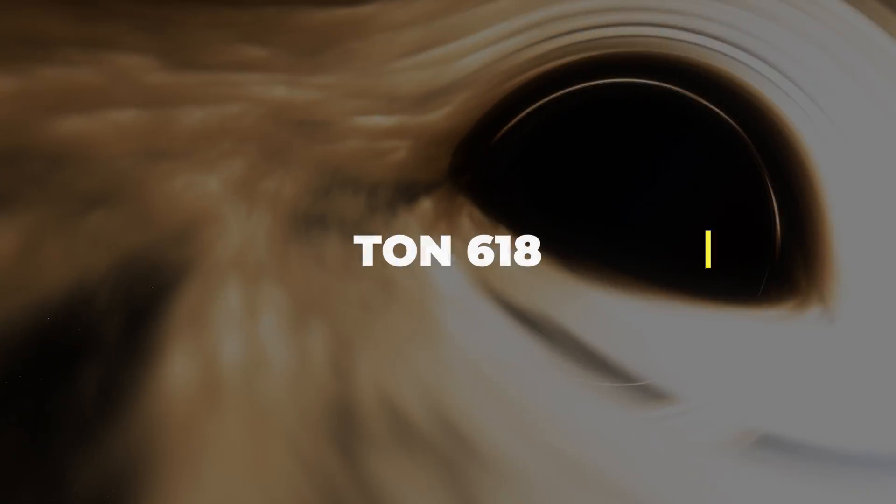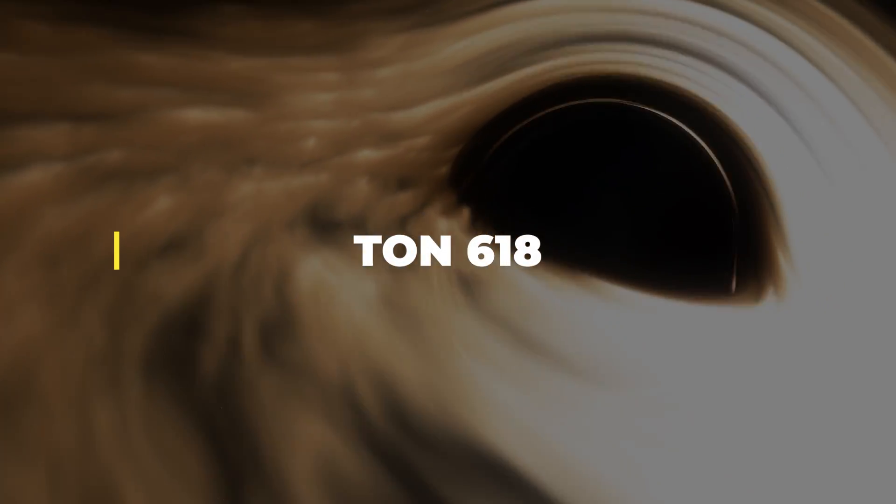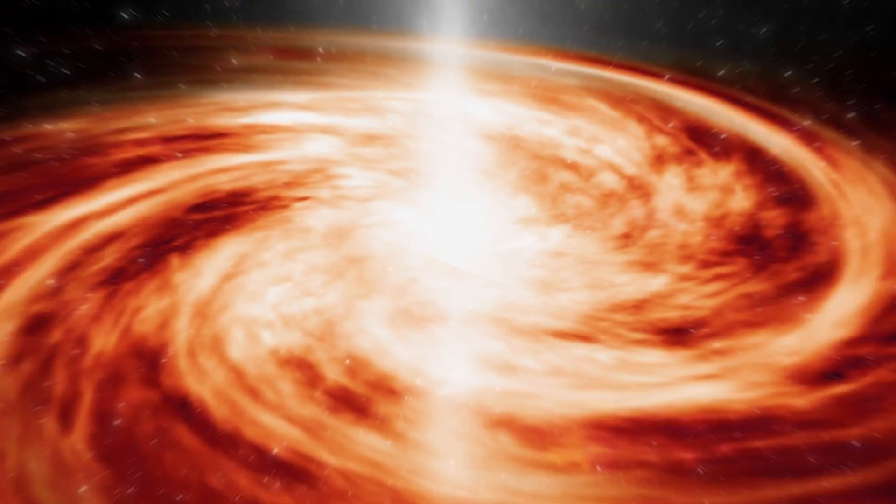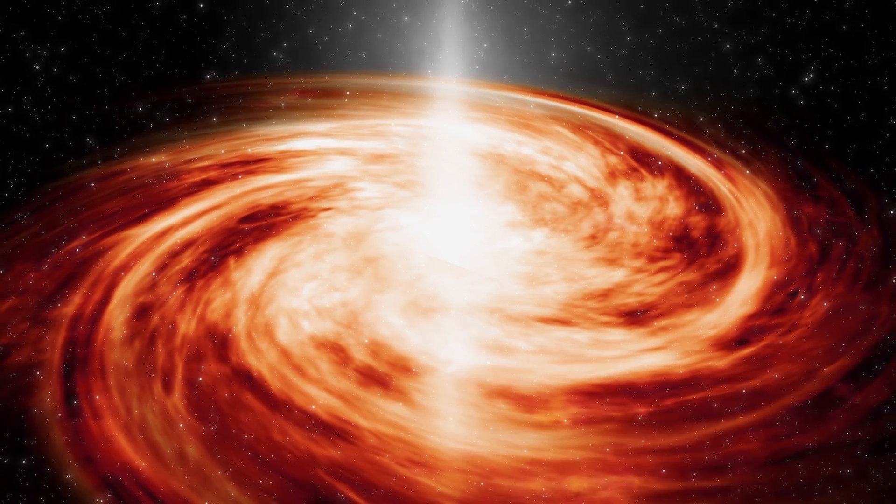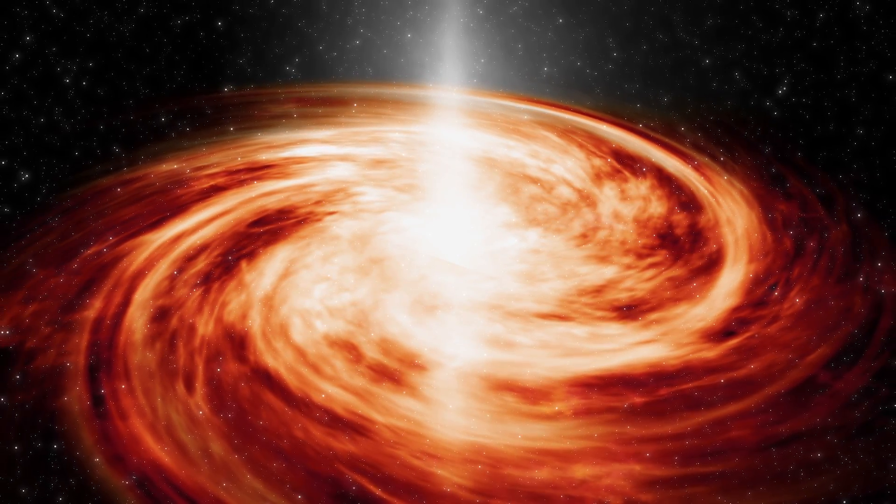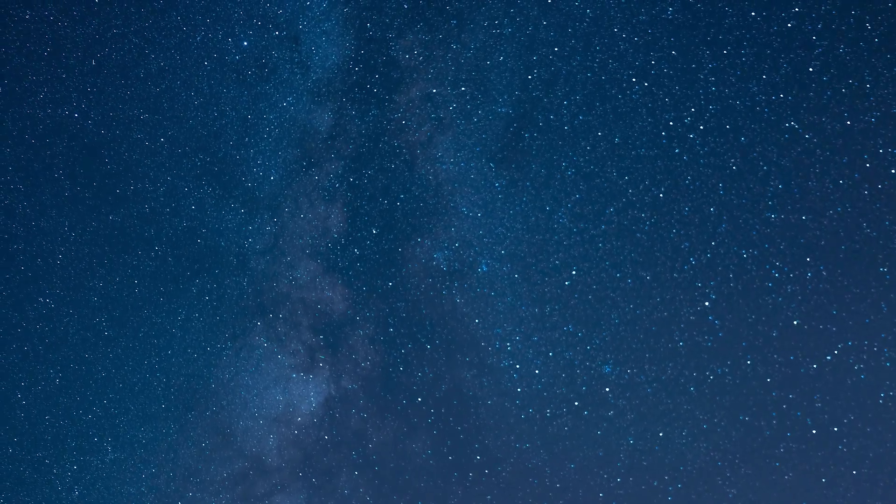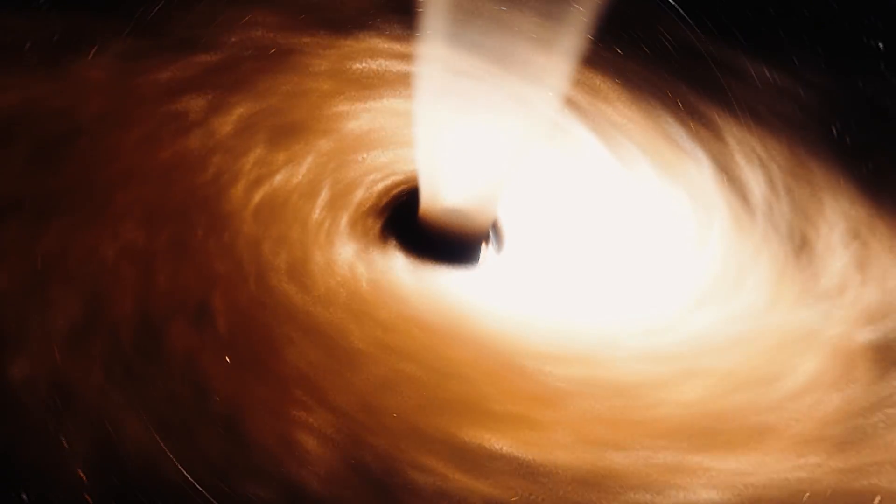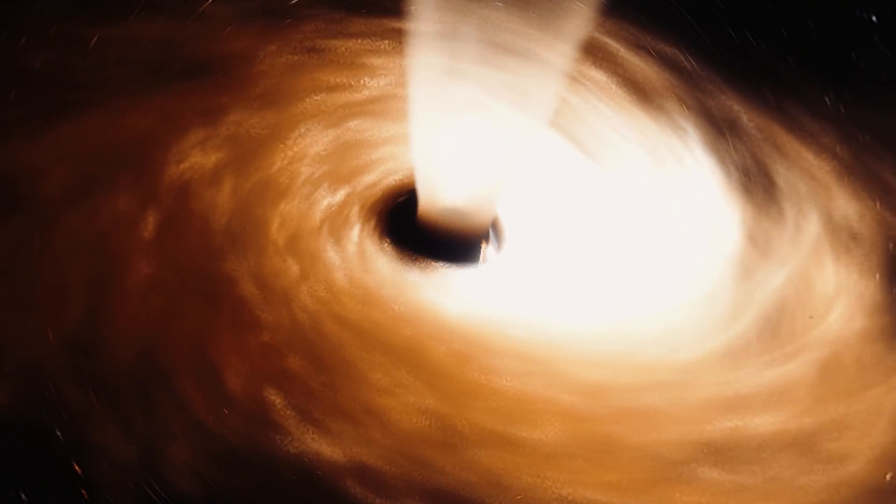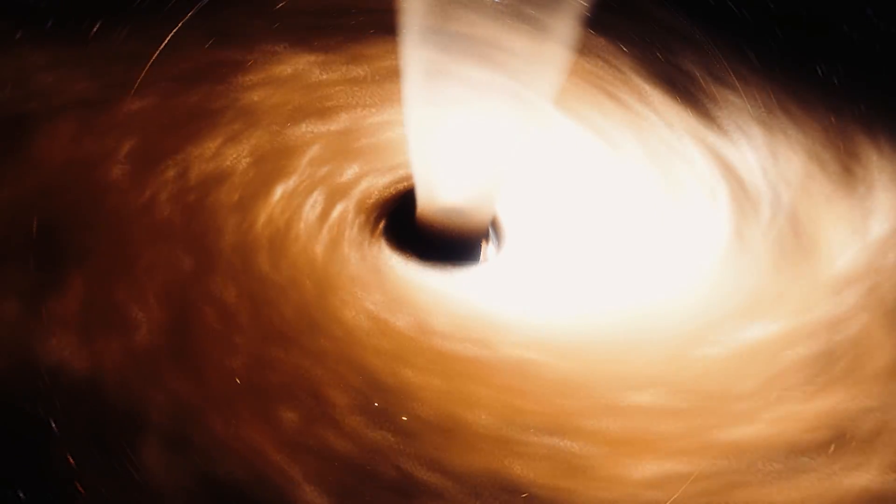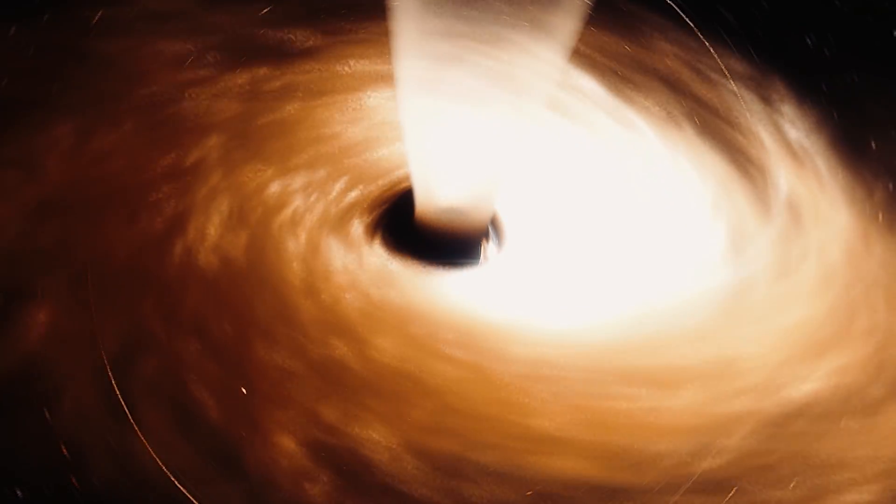One of the largest supermassive black holes known to us is Ton 618, an outrageously luminous quasar that outshines entire galaxies as it feasts on surrounding matter. The light we see from Ton 618 today left it over 10 billion years ago, a glimpse into the universe's distant past. At the heart of this quasar lies the black hole itself with a mass about 66 billion times that of our sun.